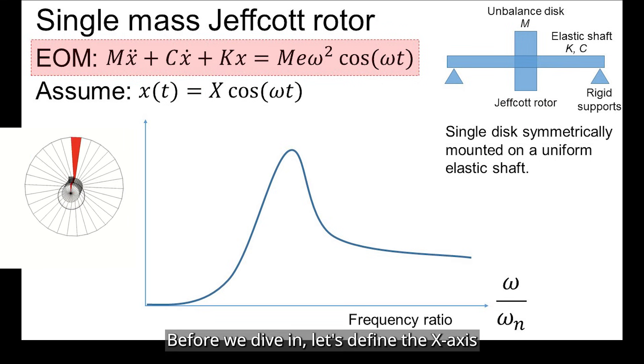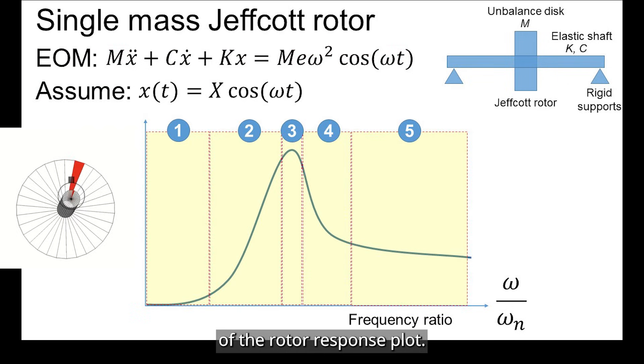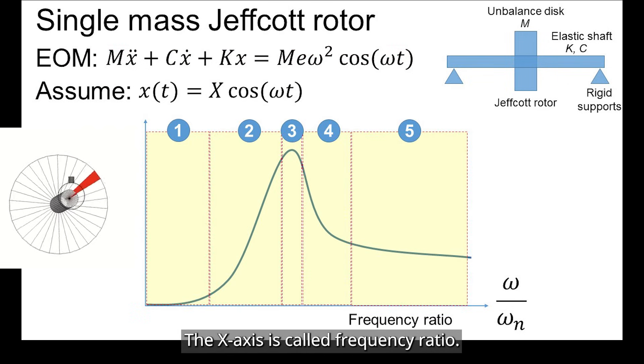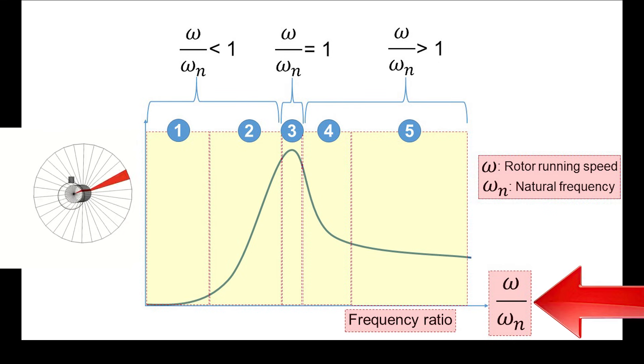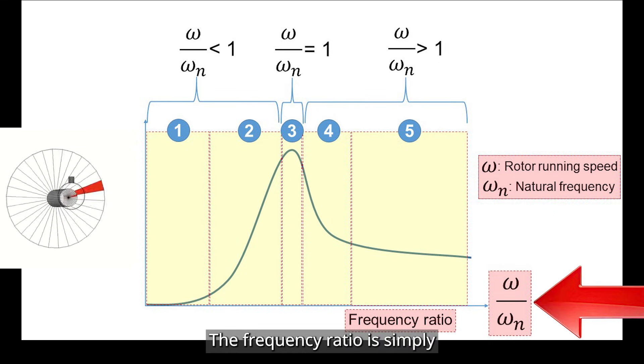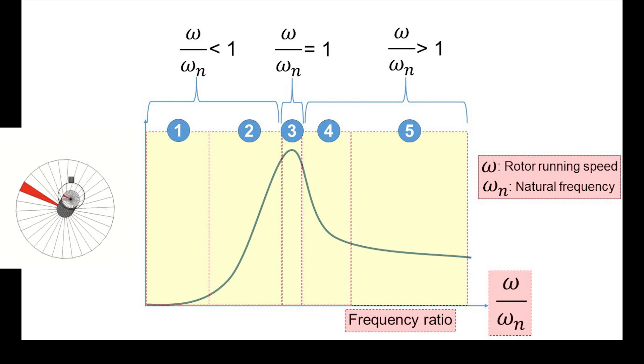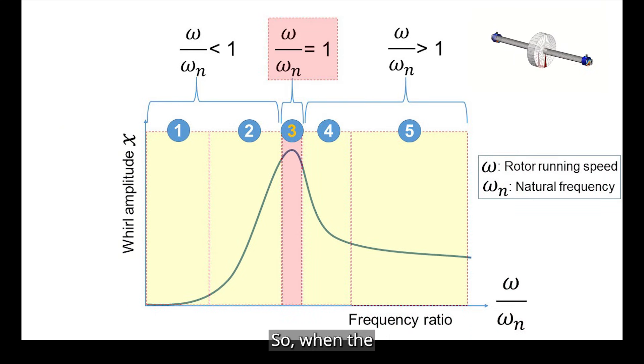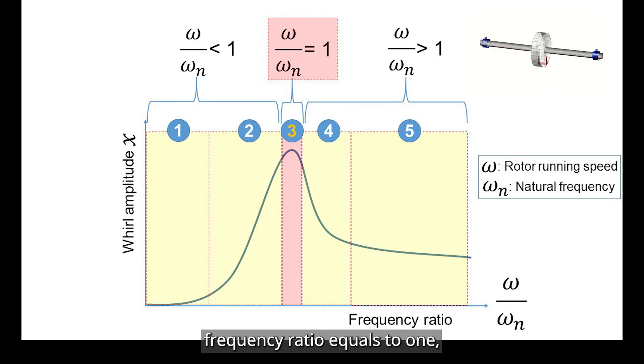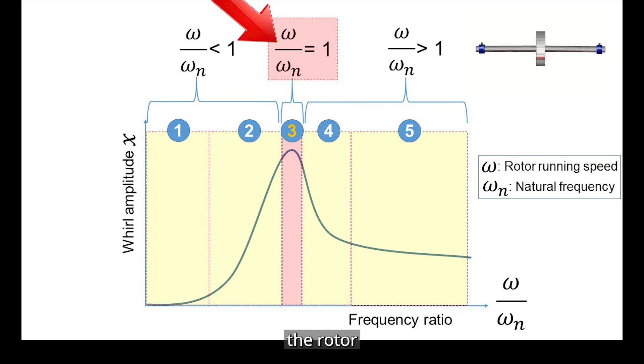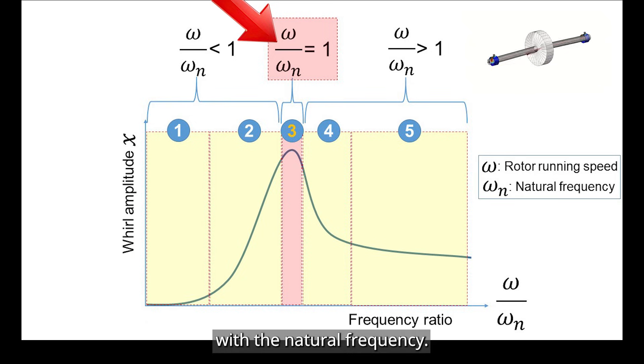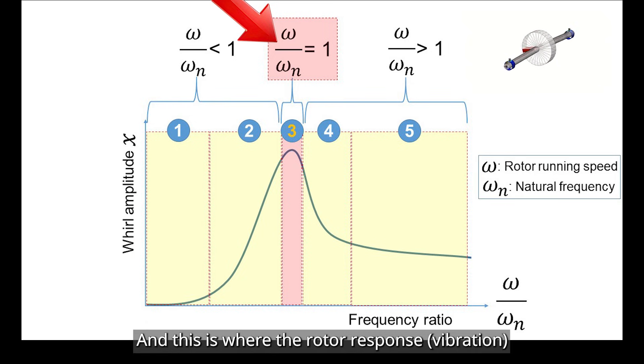Before we dive in, let's define the x-axis of the rotor response plot. The x-axis is called frequency ratio. The frequency ratio is simply rotor running speed over natural frequency of the system. So when the frequency ratio equals 1, the rotor speed coincides with the natural frequency, and this is where the rotor response is high.